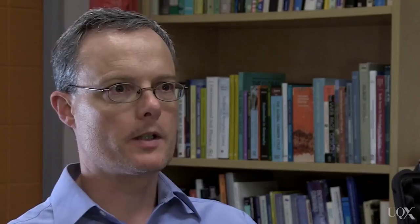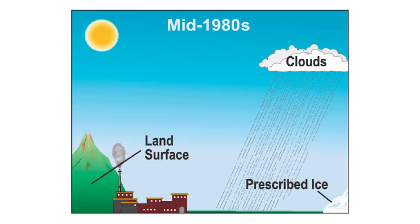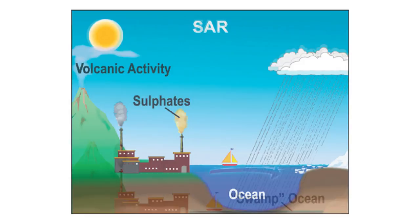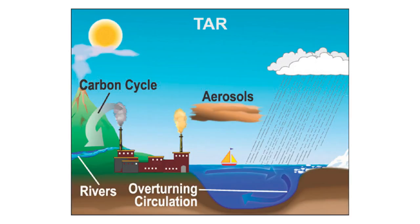There are probably no parts of a modern climate model that still reflect what was done in the 70s — almost everything has been rebuilt or rewritten. The resolution has increased from around 700 by 500 kilometers to 100 by 100 kilometers, and the detail in the vertical has increased dramatically.